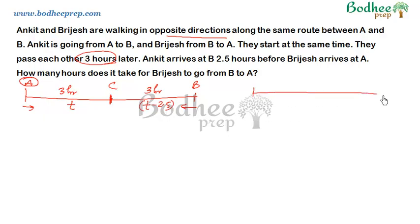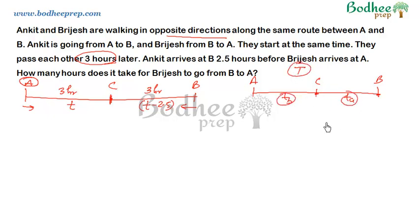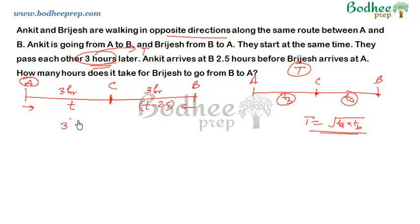The formula is: if two people are moving from A to B, they meet at point C, and the time taken to meet is capital T, then after meeting, A takes T_A time to reach destination B, and B takes T_B time to go from C to A. The relation is that capital T is the geometric mean of the time taken after meeting. So T squared equals T_A times T_B. I'll directly apply the formula here: capital T is 3, so 3 squared equals T_A times T_B.